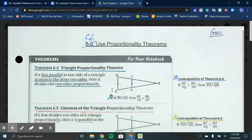Starting this proportionality theorem section, we have Theorem 6.4, Triangle Proportionality Theorem. That theorem says if a line parallel to one side of a triangle intersects the other two sides, then it divides the two sides proportionally.